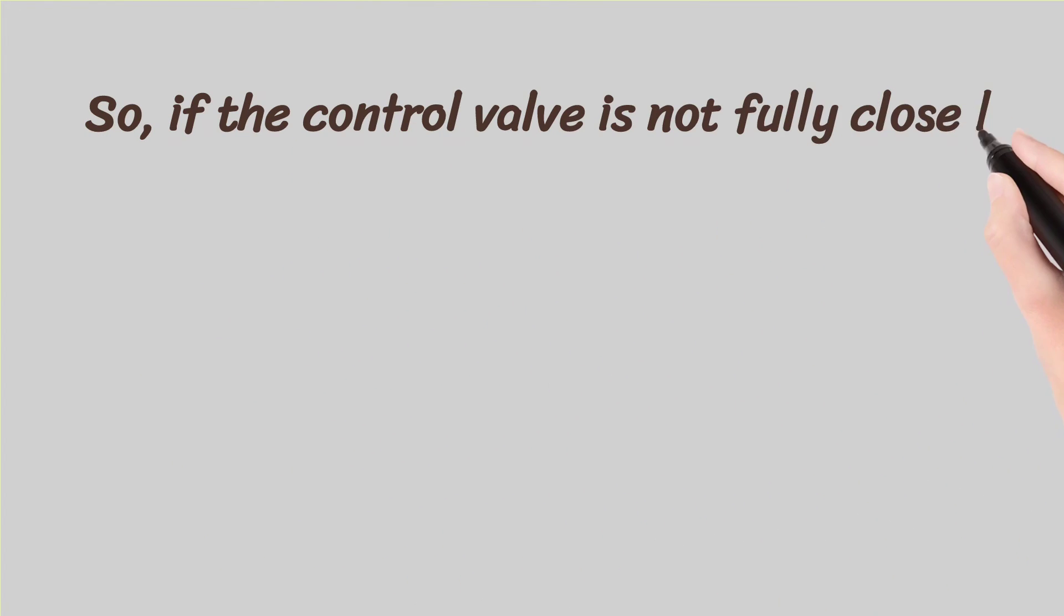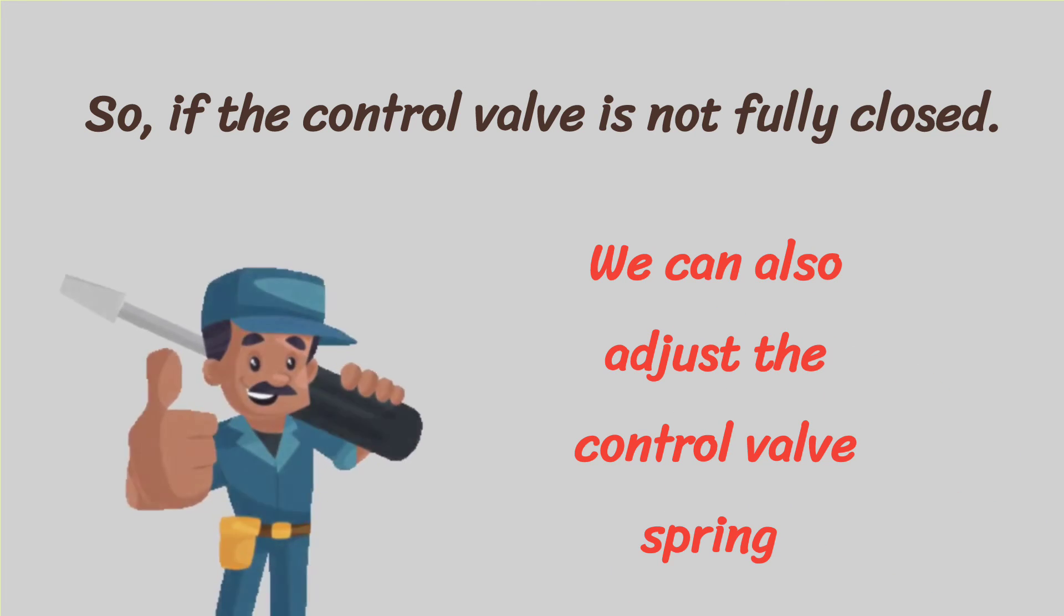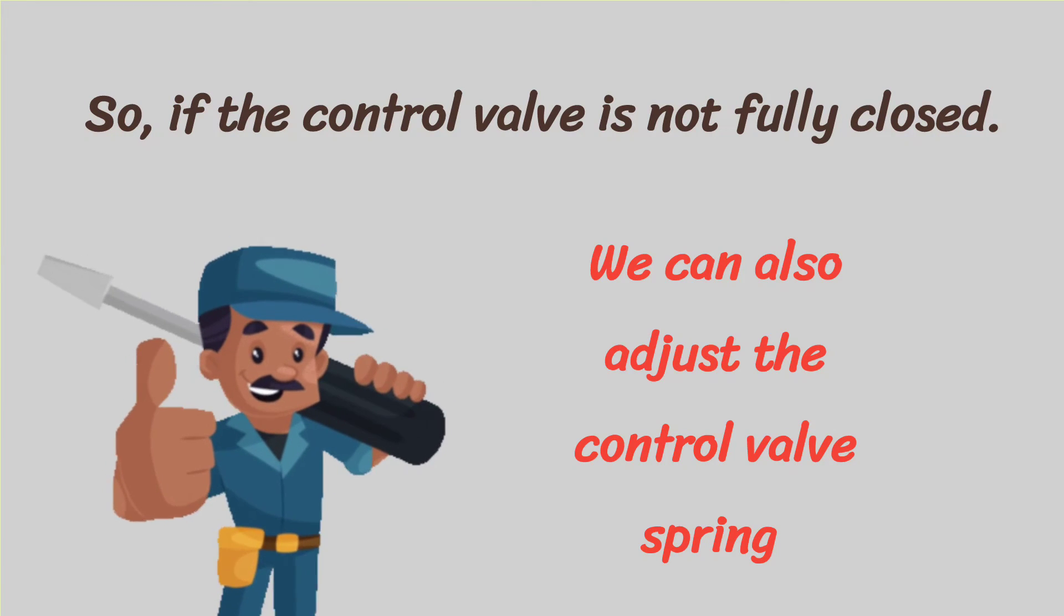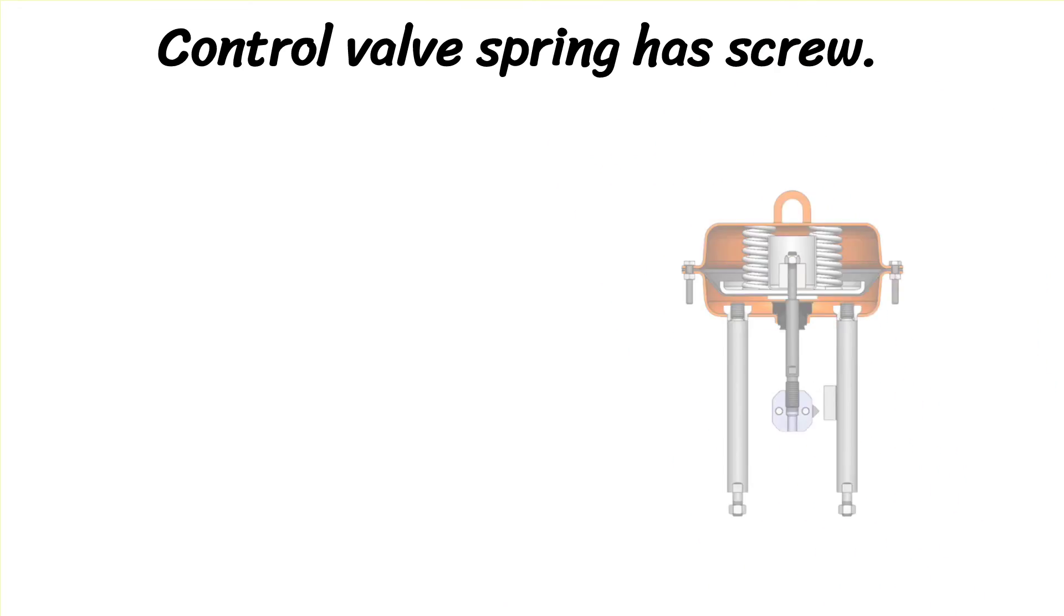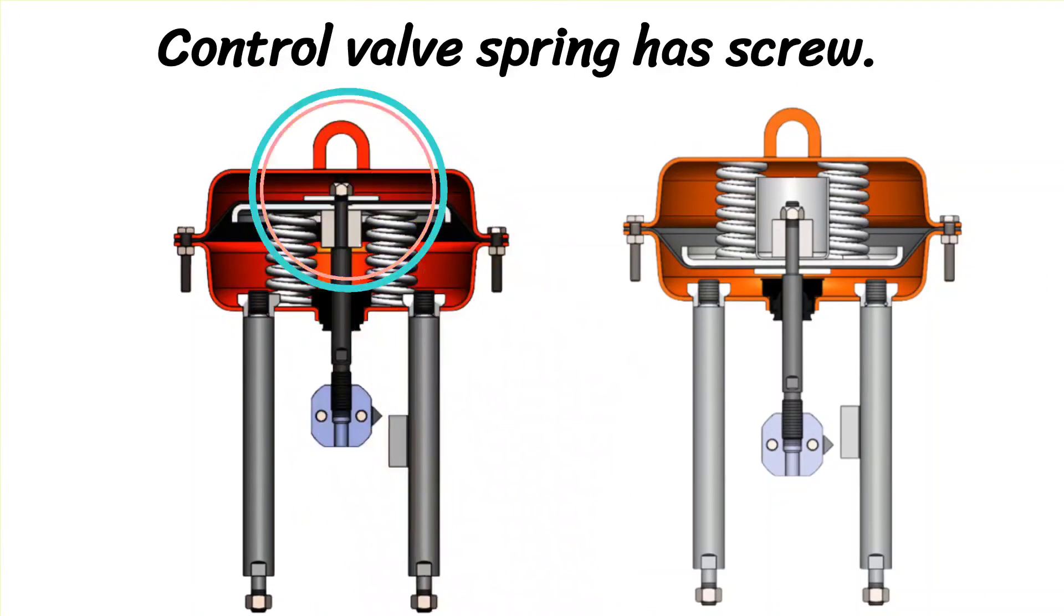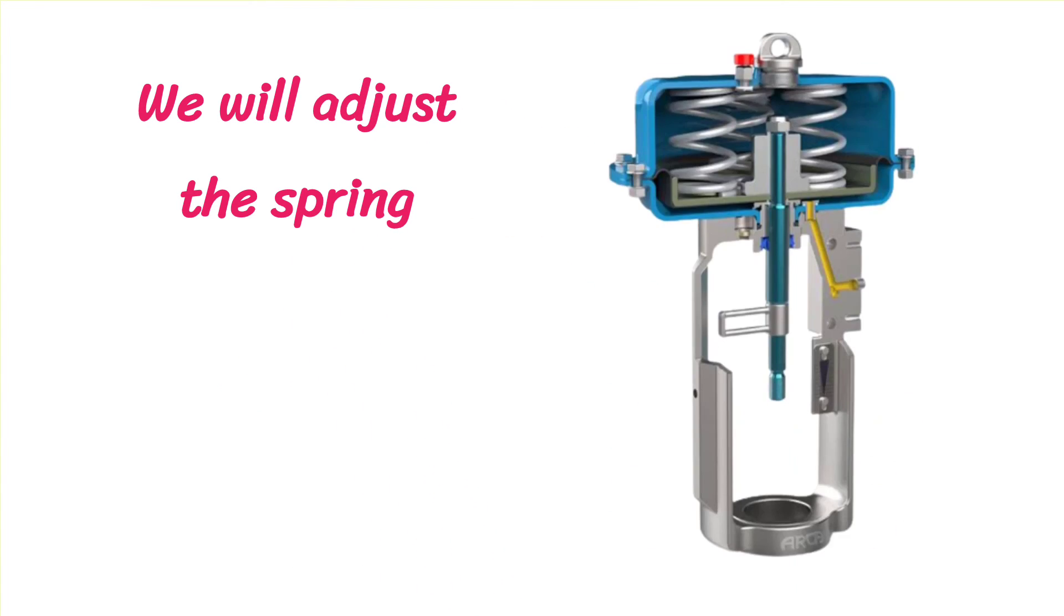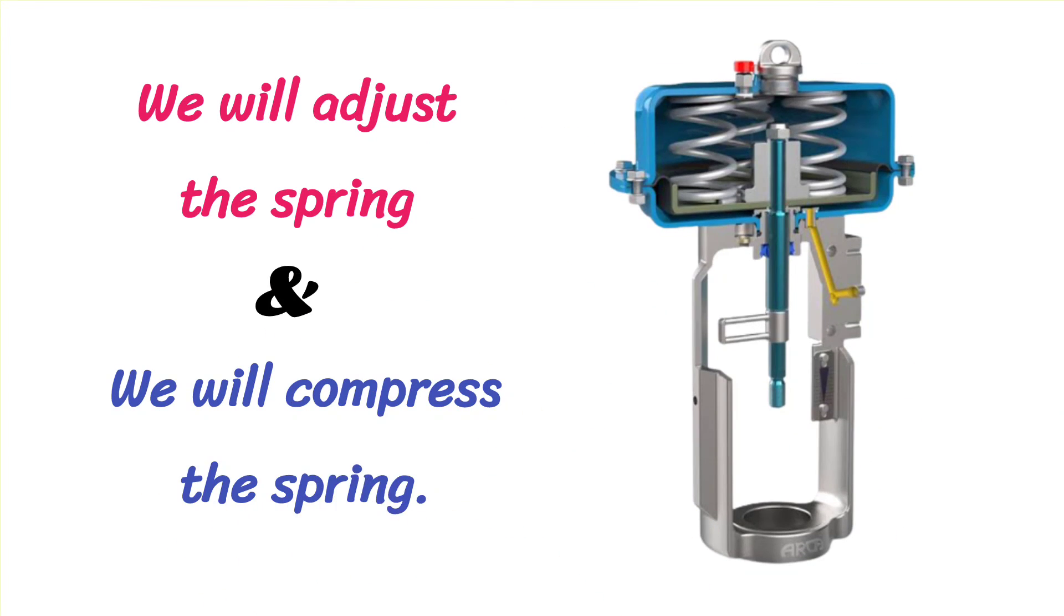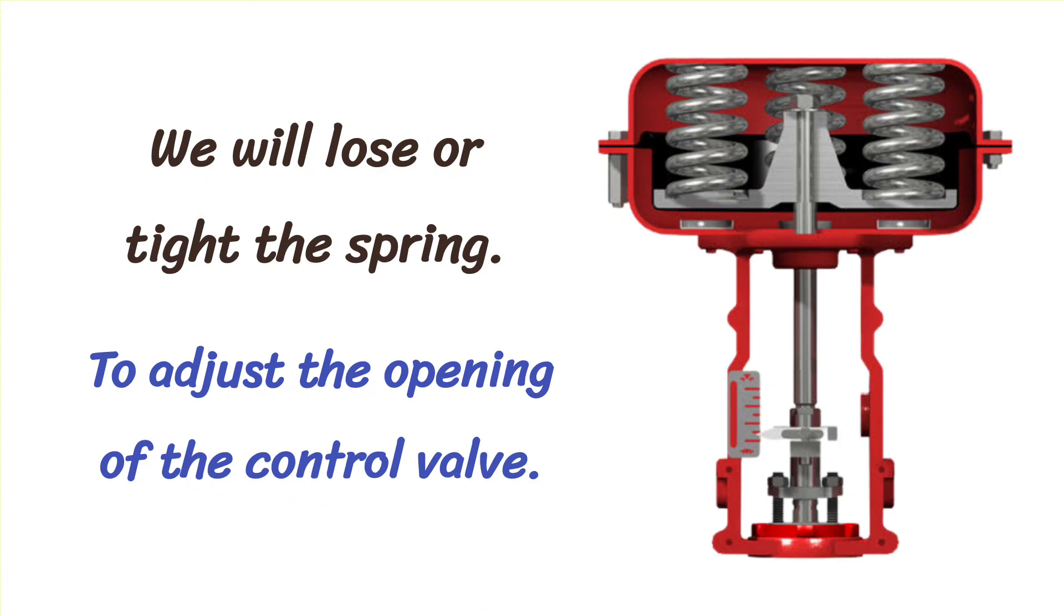So, if the control valve is not fully closed, we can also adjust the control valve opening by spring adjustment. Control valve spring has screw. You can see the screw by the circle shown in the left and right images. We will adjust the spring. We will compress the spring. We will loose or tight the spring to adjust the opening of the pneumatic control valve.